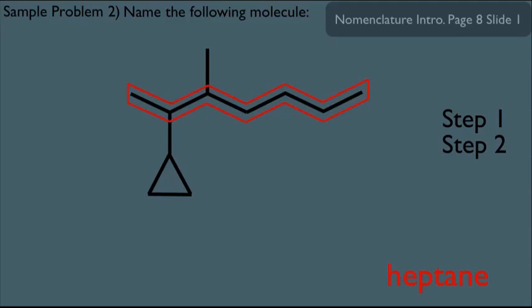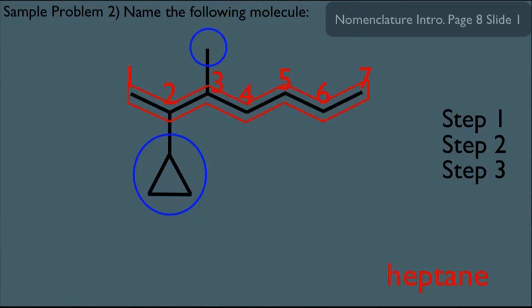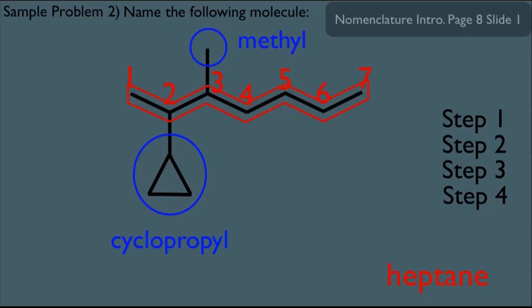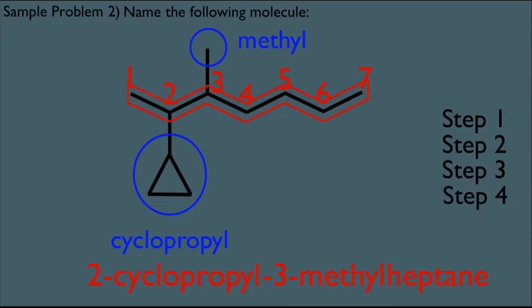Moving to step two, we correctly number these carbons. To get small branch numbers, we number from left to right: carbon one, two, three, four, five, six, and seven. For step three, we circle and label our substituents. We get a methyl substituent on top, and for the ring substituent — if it were a ring by itself it would be cyclopropane, but since it's acting as a substituent we change the -ane ending to -yl, so it's called cyclopropyl. For step four, since cyclo-C comes before methyl-M, the name is 2-cyclopropyl-3-methylheptane.